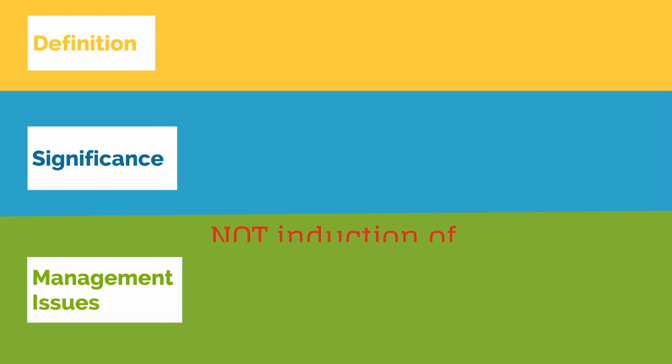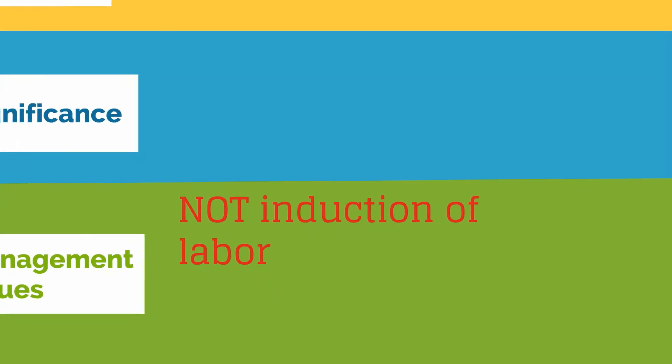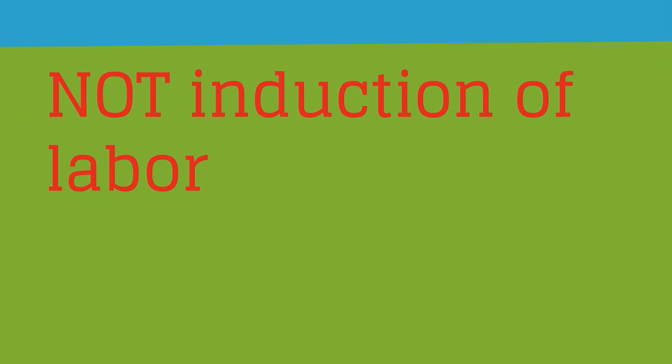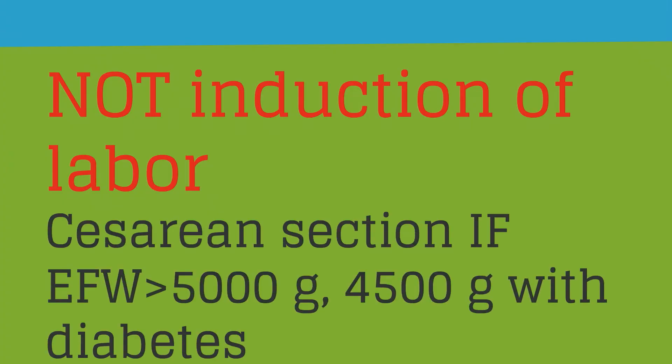Once the diagnosis of fetal macrosomia is made, management does not include induction of labor, as this does not decrease maternal or neonatal morbidity and actually increases the c-section risk. The American College of Obstetricians and Gynecologists recommends a primary cesarean section if estimated fetal weight is greater than 5,000 grams for a patient without diabetes, or 4,500 grams for a patient with diabetes.